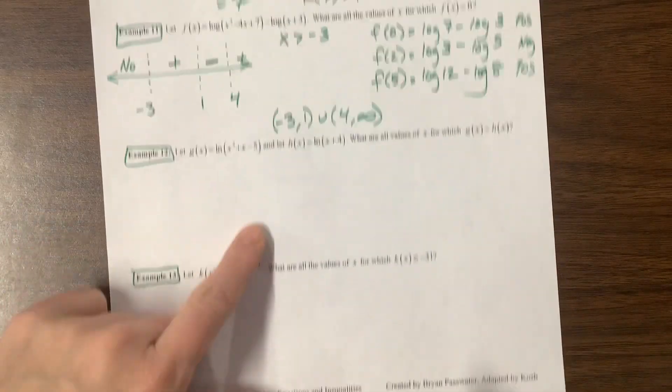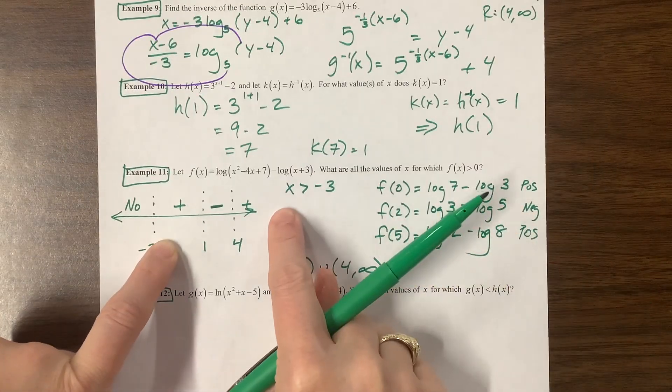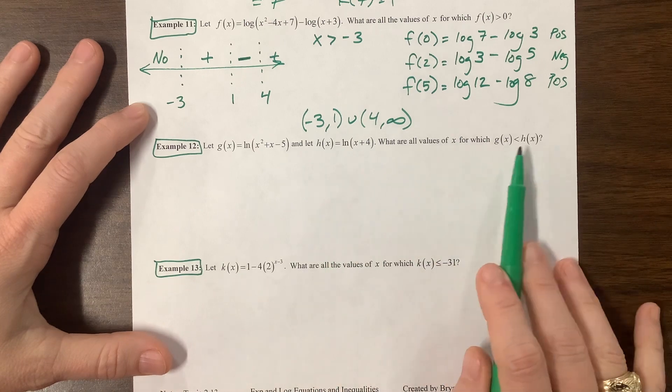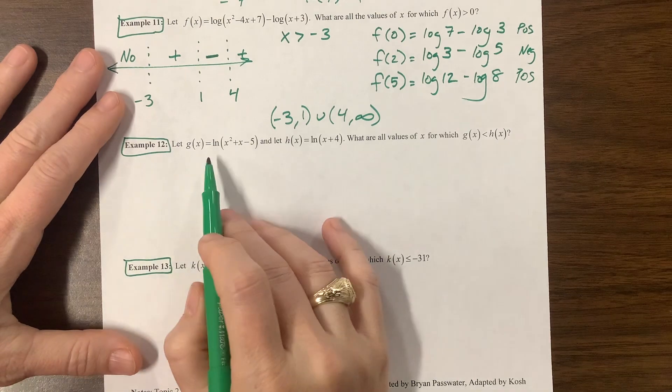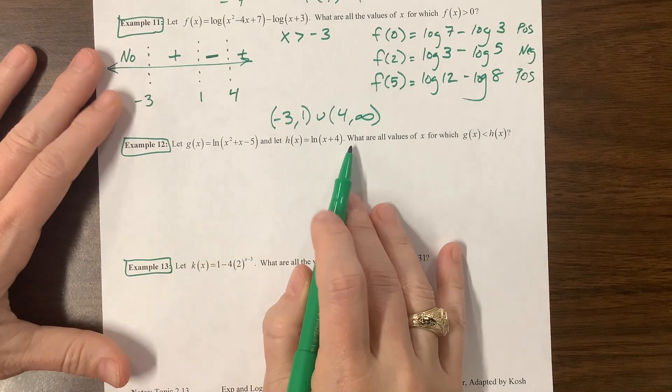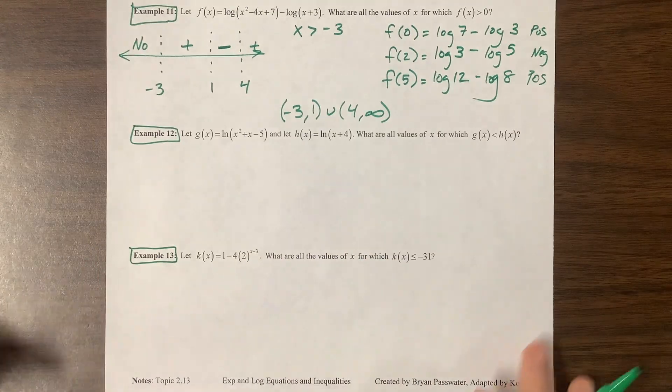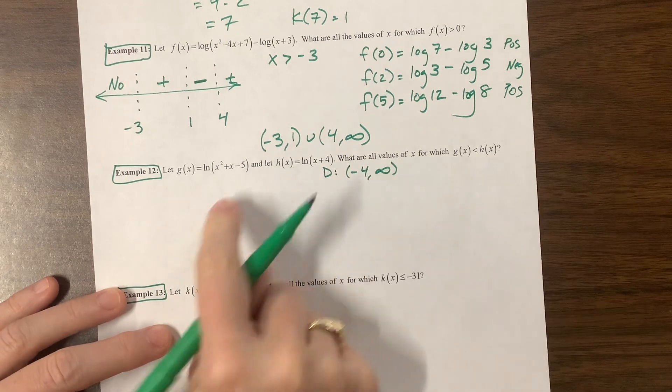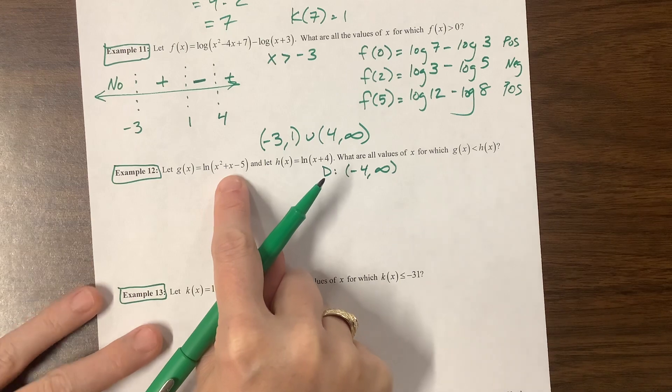On this one, we did an inequality just a minute ago. The third video was the first of the inequalities. They've given us g, they've given us h, and they're asking us when is g less than h. So what we need to do is consider the domain of each of these and then consider where they actually intersect. The domain of this guy is pretty straightforward, negative 4 to infinity. The domain of this guy is not as straightforward, and that doesn't factor, which is annoying.